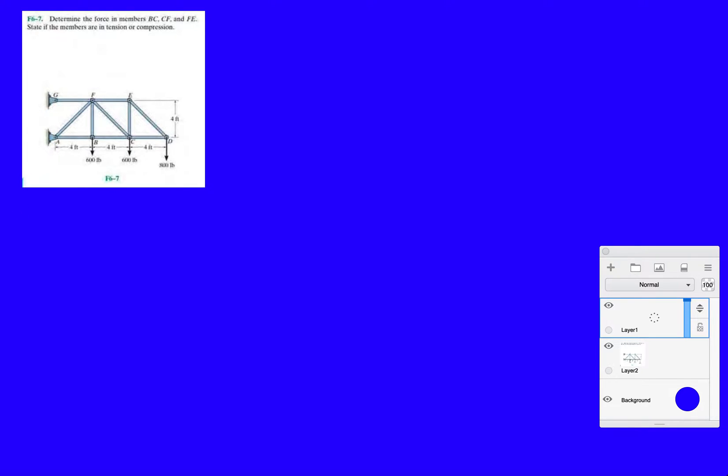For this one, you're looking at BC, CF, and FE. BC is right here, CF is right here, and FE is right here. You want to make your cut through the joints that they're asking you to find the force in.